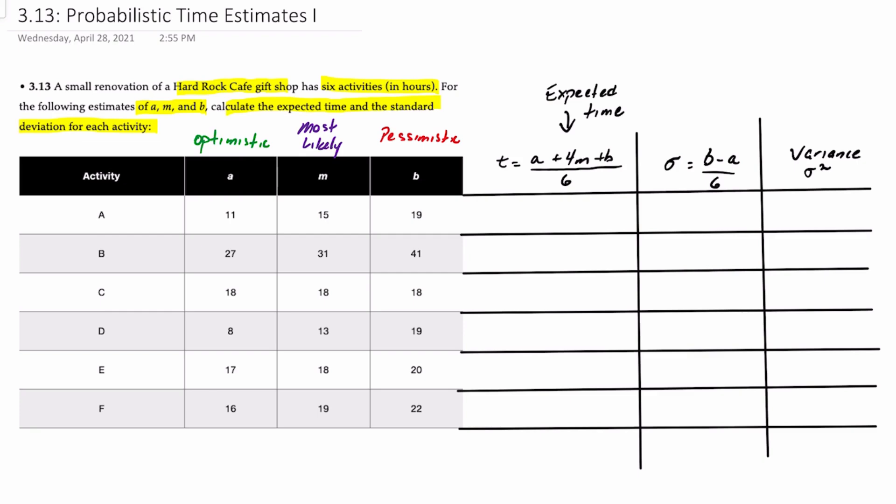A represents the optimistic time, B represents the pessimistic time, and M represents the most likely times.